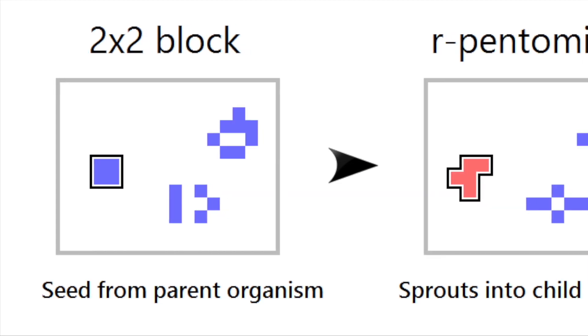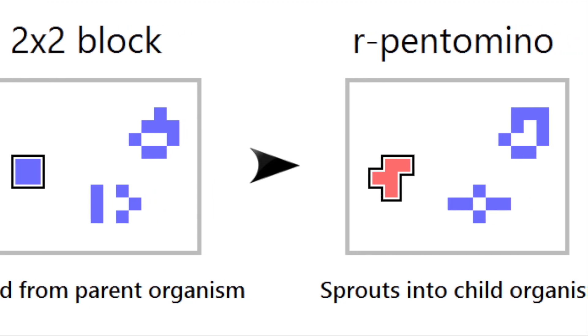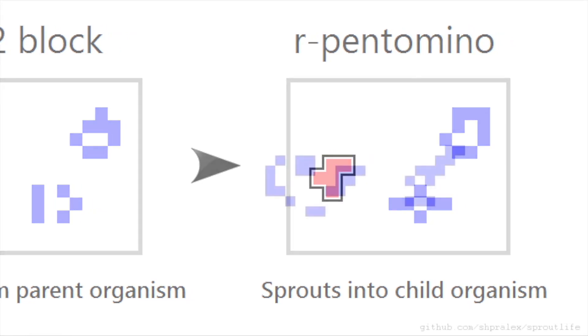That rule is that whenever we see a particular seed pattern, we replace it with a sprout pattern. For example, we replace a 2x2 block with an r-pentomino. That replacement becomes the birth of a new child organism.